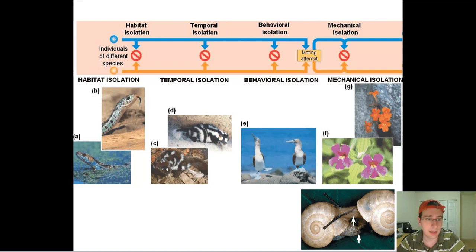So that means that even if reproduction is attempted, it's not going to be successful — or sometimes it's not even going to be attempted. If you have individuals of a different species, why are they different species? We talked about this already when we did the species test. You may notice there's some relationship between the types of species test we discussed and these types of variation, and I'll bring those up as we go.